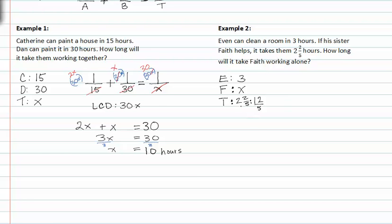We can again set up our work equation, one over three plus one over x is equal to one over twelve-fifths. Recognize that one over twelve-fifths is the same as multiplying by the reciprocal.